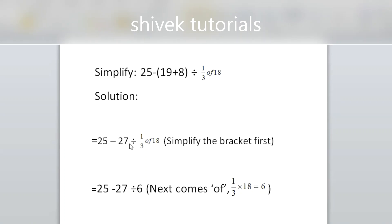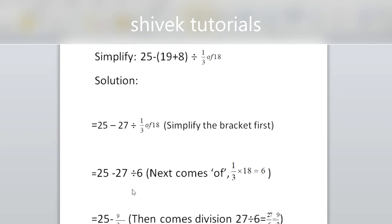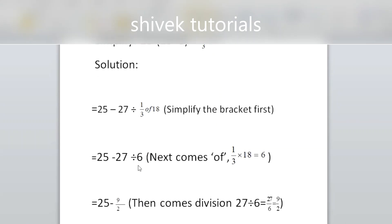Next comes division, then 1/3 of. After the bracket comes BODMAS — bracket, off. We will solve this off term first: 1/3 of 18. 'Off' means multiplication sign. 3 ones are 3, 3 sixes are 18, 1 six is 6. So the result is 6. Bracket is gone, off is also gone.